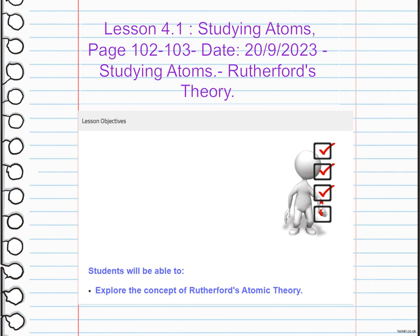From this, Rutherford concluded that atoms have a tiny, dense, positively charged nucleus at the center, surrounded by mostly empty space with negatively charged electrons orbiting around it. This model helped us understand the atomic structure and laid the foundation for the modern understanding of the atom.